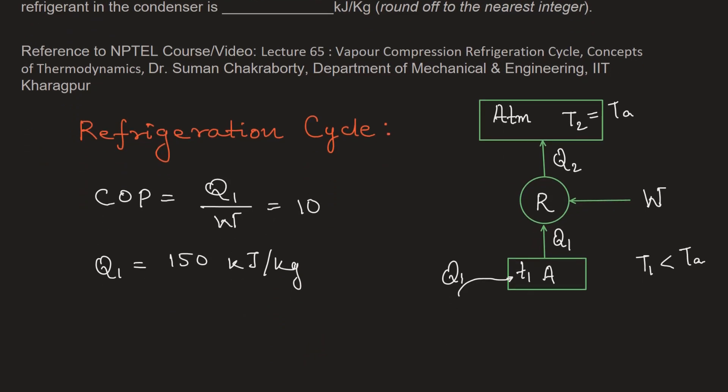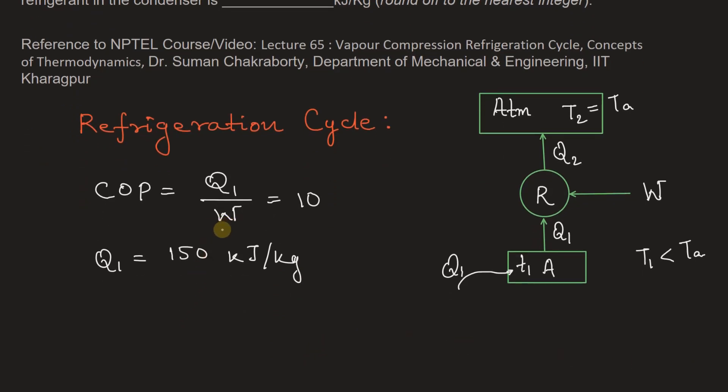Now from these two relations we can find the work done. Work will be equal to Q1 divided by COP. Q1 is 150 and COP is 10, so work done on the refrigerant will be 15 kilojoule per kilogram.